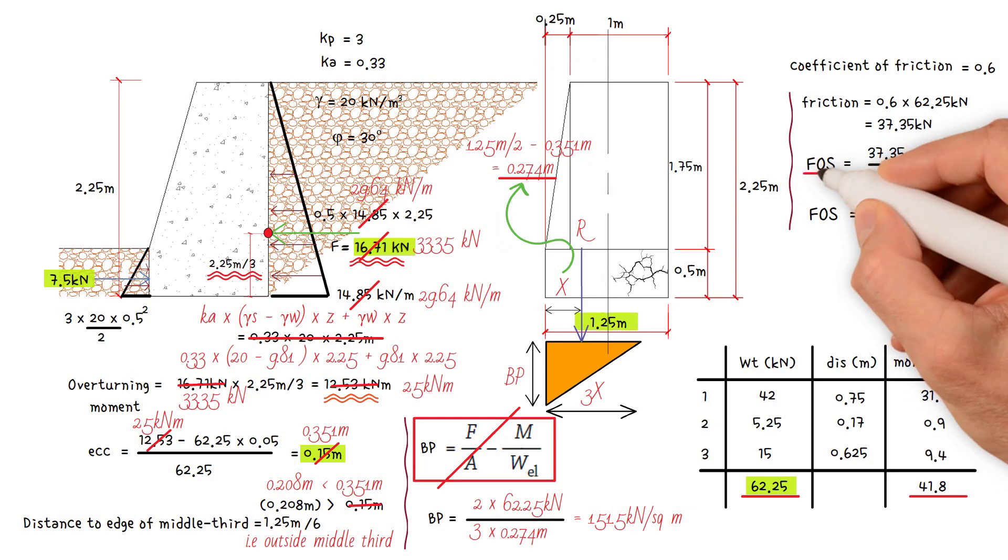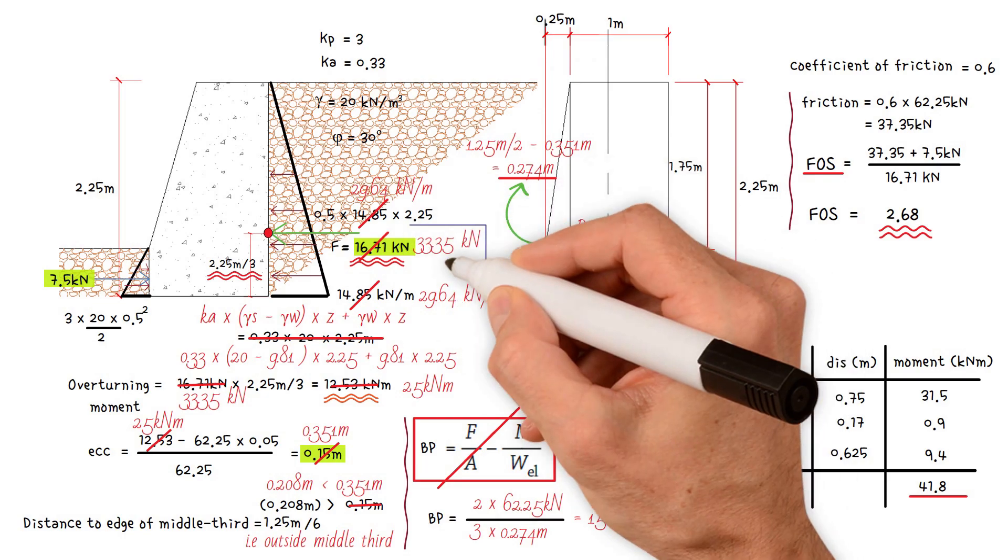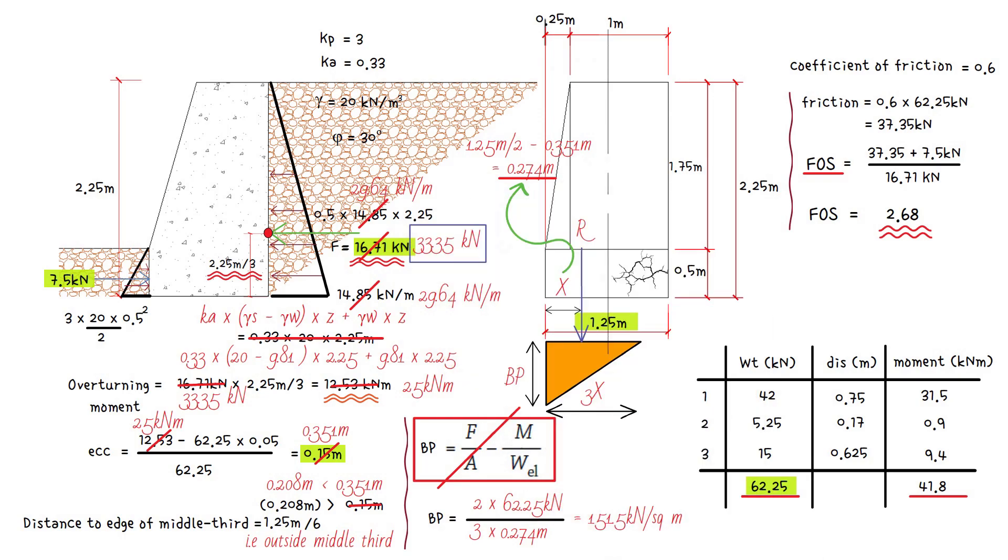Finally, checking the factor of safety against sliding, we should follow similar steps that we used in the previous video. We just need to replace the horizontal pressure by pressure due to soil and water, which is 33.35 kilonewtons. Therefore, factor of safety equals 37.35 plus 7.5 divided by 33.35. This results in a value of 1.34.